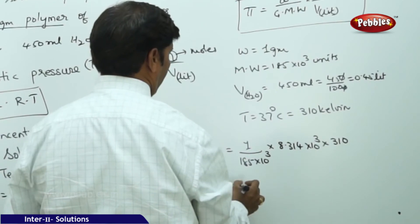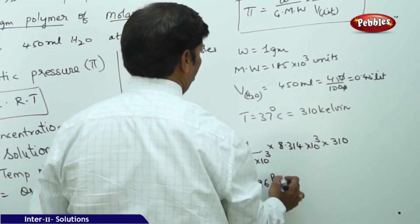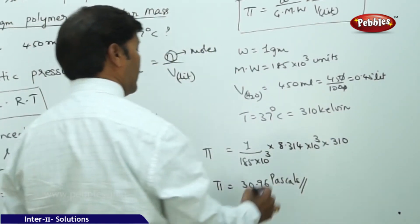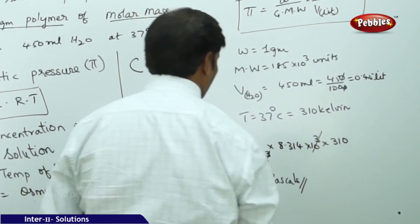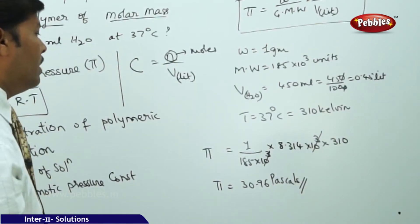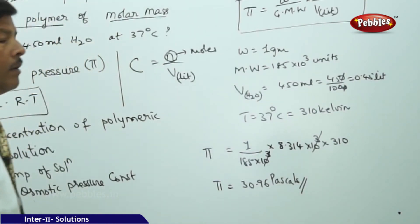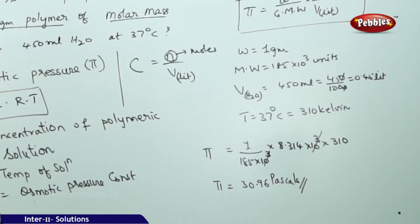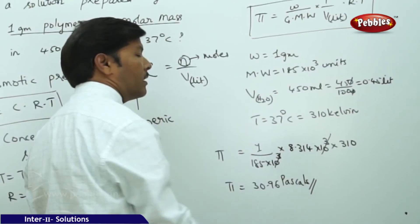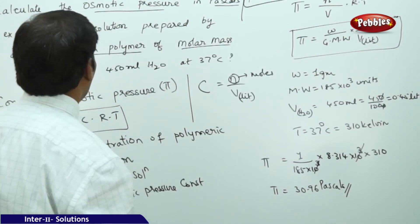Upon simplification, the 10³ terms cancel, giving π = 8.314 × 310 / 185 = 30.96 Pascals. This is the final answer for the osmotic pressure of the polymeric solution.